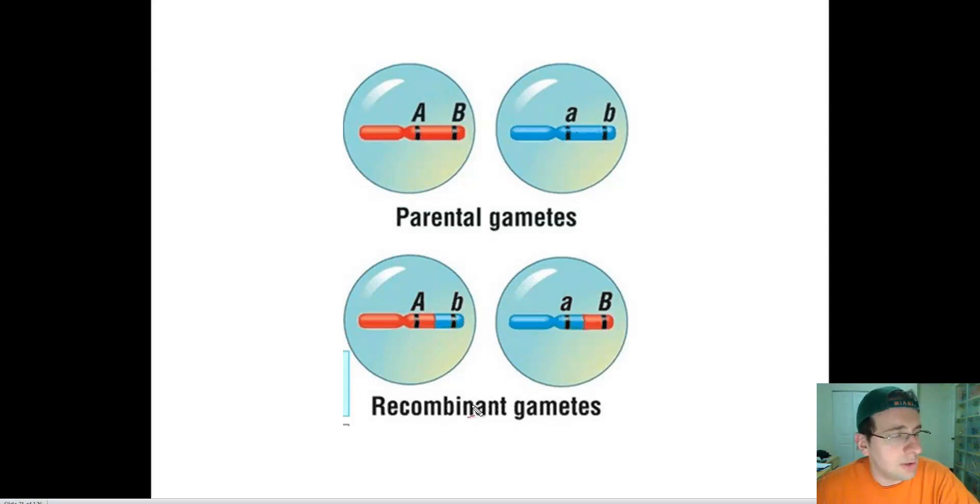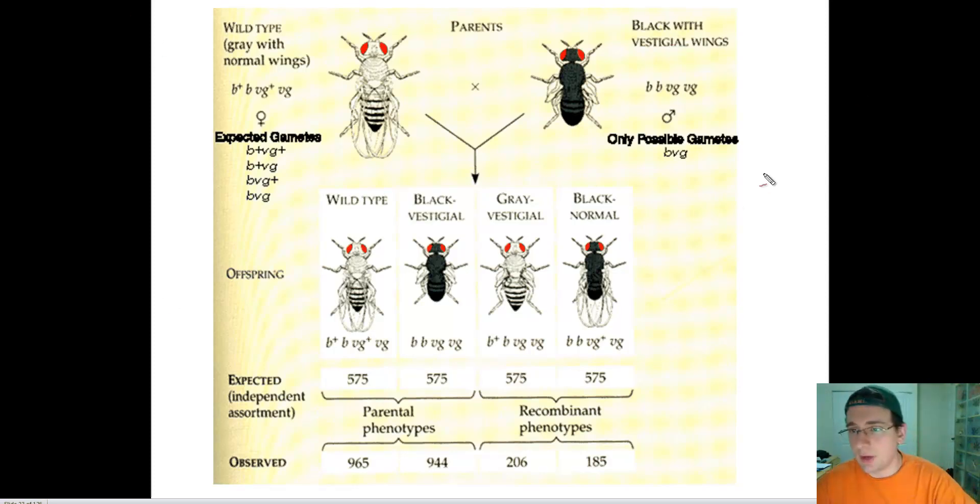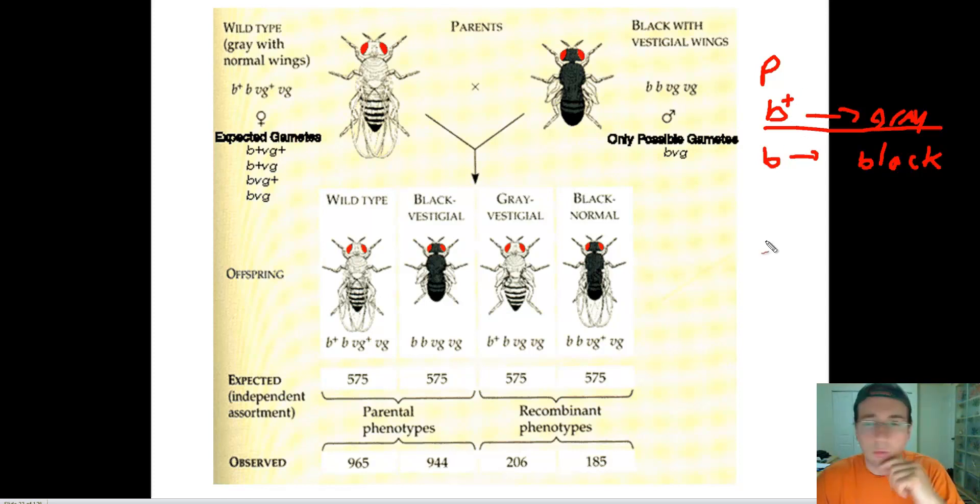So he looked at a specific cross between two flies to discover this linkage thing. And to make sense out of this, the first thing you need to know is that Big B+, is going to stand for grey. So Big B+ stands for grey, and then B will stand for black. And the B+ is dominant over the B, so that's our dominant gene right there. And I know this is a little different from the code that Mendel used, Mendel used Big B, Little B, but Morgan just wanted to keep one letter to represent, or one code to represent each thing, and then he used the plus sign to represent dominance. So this is a little different version of genetic coding.